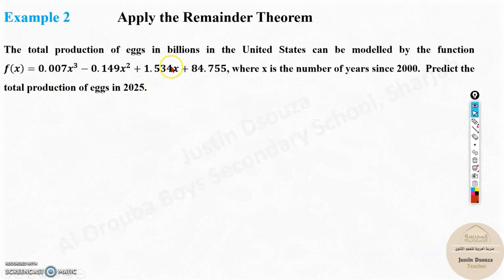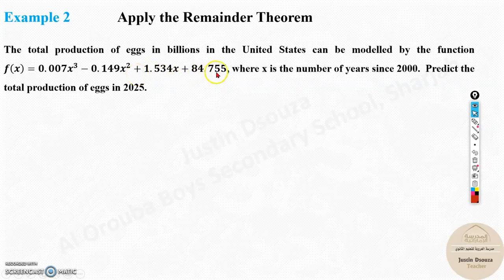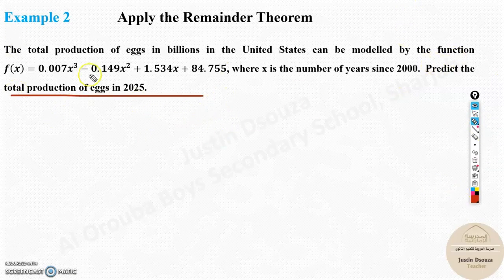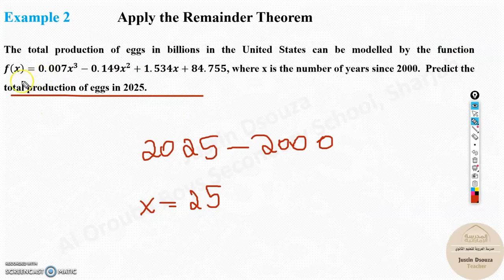Now, going on to the remainder theorem applied to a real-world problem. The total production of eggs in billions in the United States can be modeled by f(x) = 0.007x³ − 0.149x² + 1.534x + 84.755, where x is the number of years since 2000. If they ask you to predict the total production of eggs in 2025, you need to calculate 2025 minus 2000, so x equals 25.